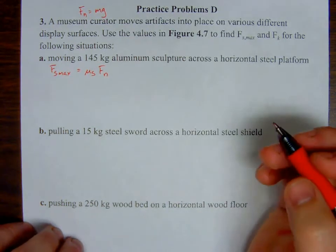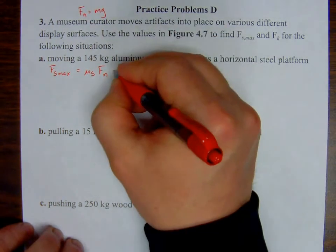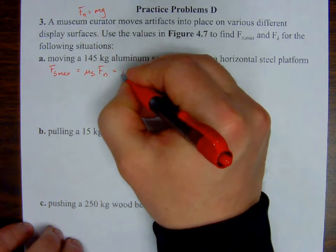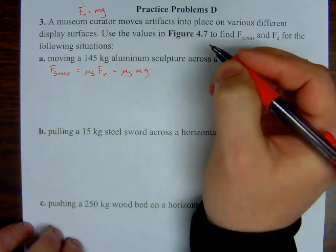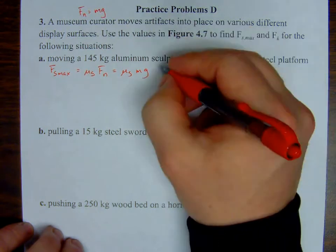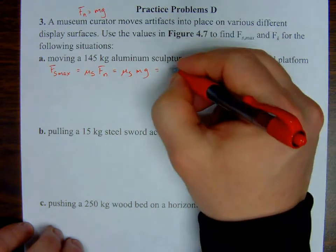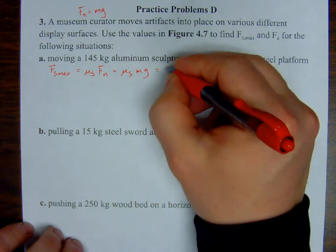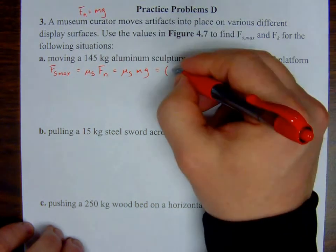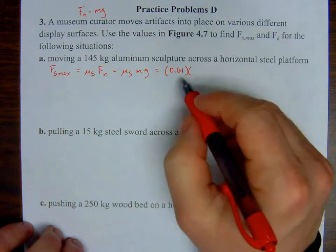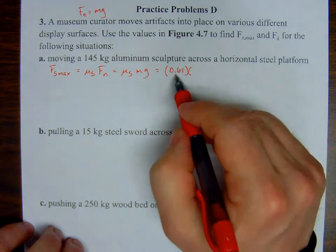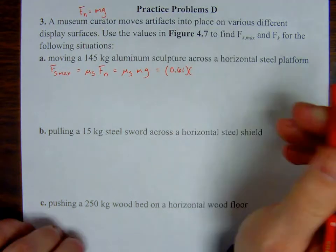Okay, so plugging in some values, again, looking at figure 4.7, I'm not memorizing these things, I'm not expecting you to have memorized them, but you have to actually look up the value right here. Coefficient of static friction, that's the old platform, alright, the mass is 145 kilograms, and that acceleration is 9.81 meters per second squared.